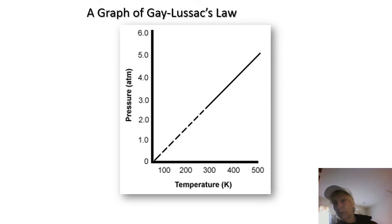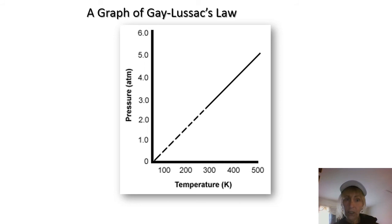Here is a graph of Gay-Lussac's Law. Note the difference between Charles's Law — which is a direct relationship between volume and temperature — and Gay-Lussac's Law — which is also a direct relationship, but between pressure and Kelvin temperature. As one increases the other increases, or as one decreases the other decreases. This is totally different from the graph of Boyle's Law, which was an inverse relationship. Make sure you understand the difference.